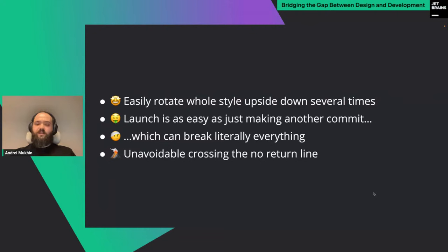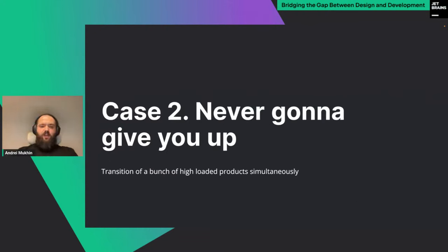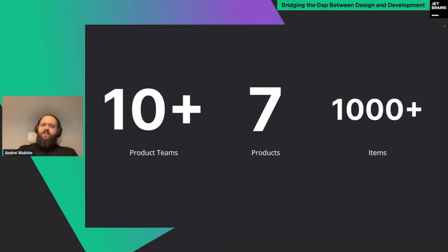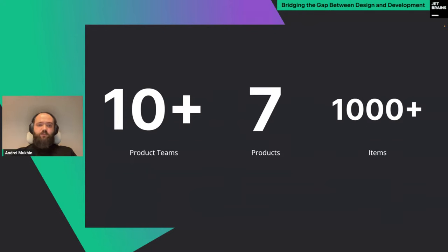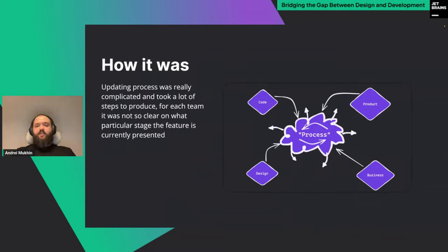Luckily we started facing this problem not so far from the release point, so we were still able to prepare the MVP and fit all deadlines. What was learned: this approach gives the ability to change products really fast and in a few commits; flexibility allows launching upcoming and unexpected features without obstacles. But because of this flexibility there can be rollbacks and technical faults due to the process not being fine-grained or a lack of tests. At one point you'll definitely cross the line of no return and have to decide how to organize your design system next. This brings us to the second case: an enterprise company with many projects in production for years that decided to unite them with one styling language.